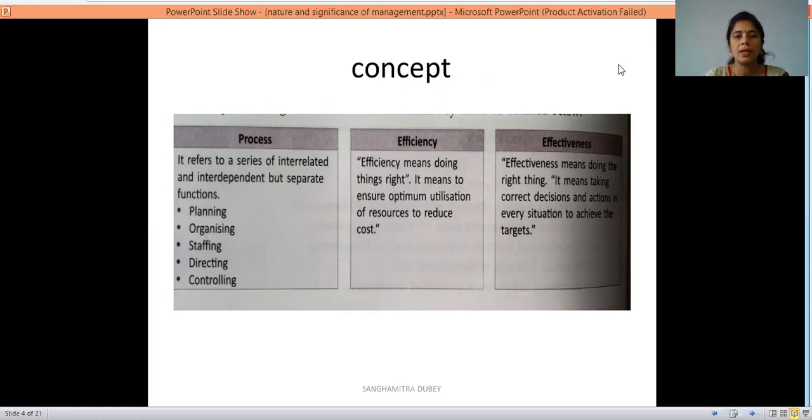Next, that is efficiency and effectiveness. Efficiency means doing the things right. It means to ensure optimum utilization of resources to reduce the cost. The main thing here is that we are fulfilling or achieving our objectives while utilizing our resources better to reduce the cost.